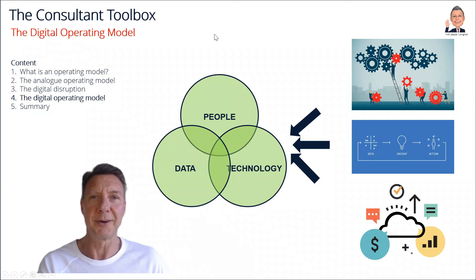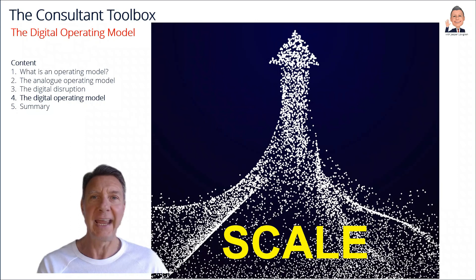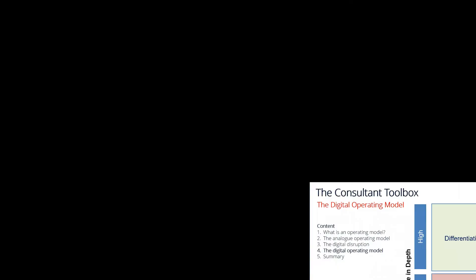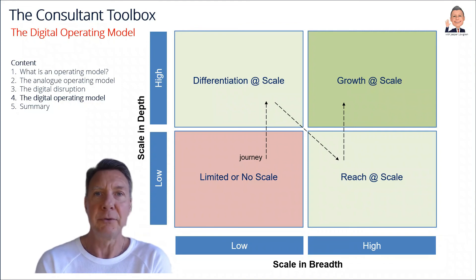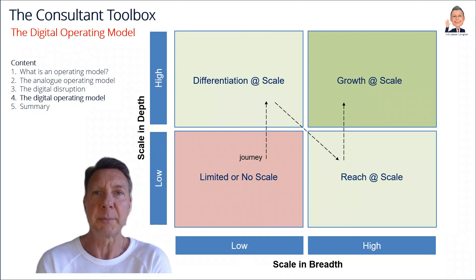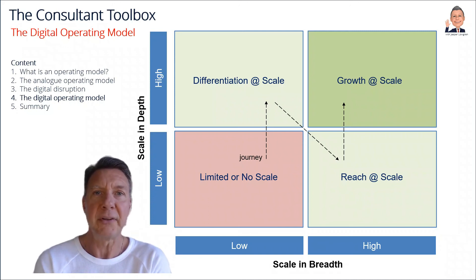So what's a digital operating model ultimately about? It can be summed up in one word: scale. Scale is growth at near zero marginal cost — growth at no cost. I like to think of scale across two dimensions: scale in depth and in breadth. Scale in depth is typically where an organization starts, leveraging its own resources through automation — for example, sales and marketing automation, robotic process automation. Ultimately, scale in depth is about differentiating and using digital technology to differentiate as much as possible and as fast as possible.